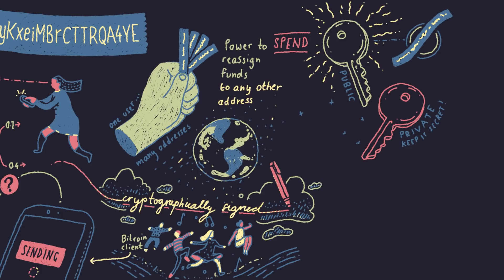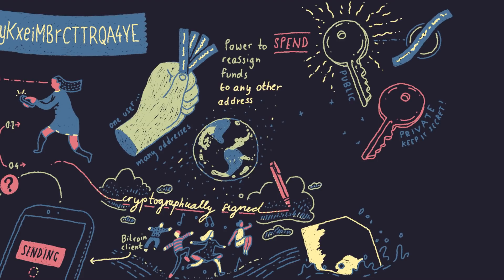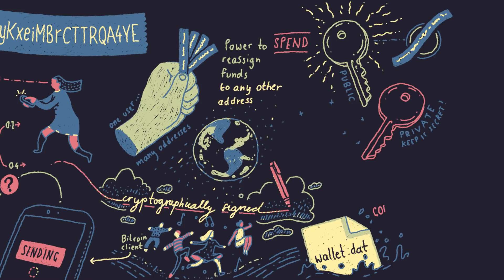By the way, most of the time bitcoin users don't need to worry about this complexity because their clients automatically keep track of their receiving addresses as well as their public and private keys. Bitcoin clients typically store all this information in a file known as a bitcoin wallet. It's an important responsibility of each bitcoin user to secure his wallet file against theft and hardware failure. If you lose bitcoins in these ways, they're gone forever.